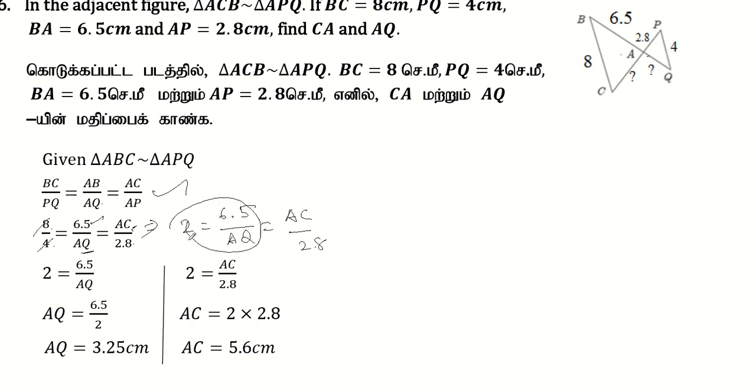From the first equation, 2 equals 6.5 divided by AQ. Solving for AQ, we get AQ equals 6.5 divided by 2, which equals 3.25cm.